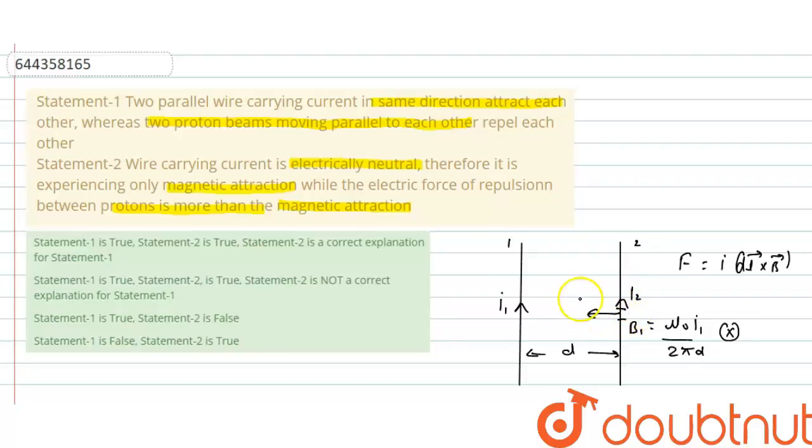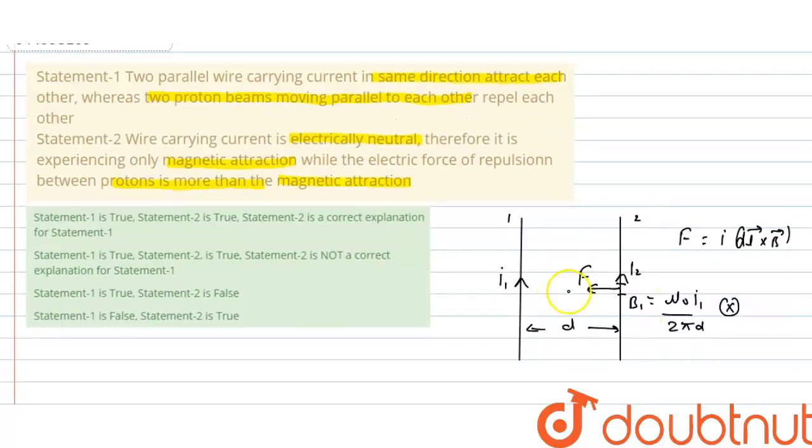And in case of two proton beams, yes, if two proton beams are moving parallel, then force of repulsion. Here you can see in wire, total charge is zero because electron and proton present in equal number, so this is electrically neutral. So there is no electric repulsion, only magnetic attraction.